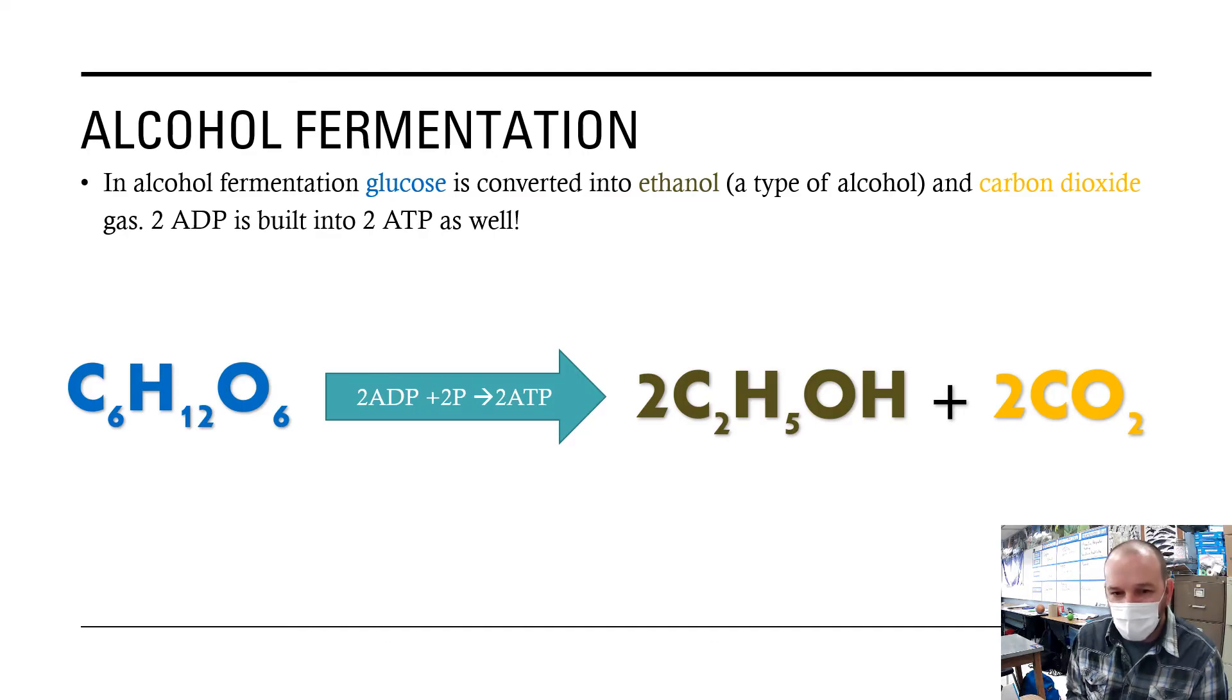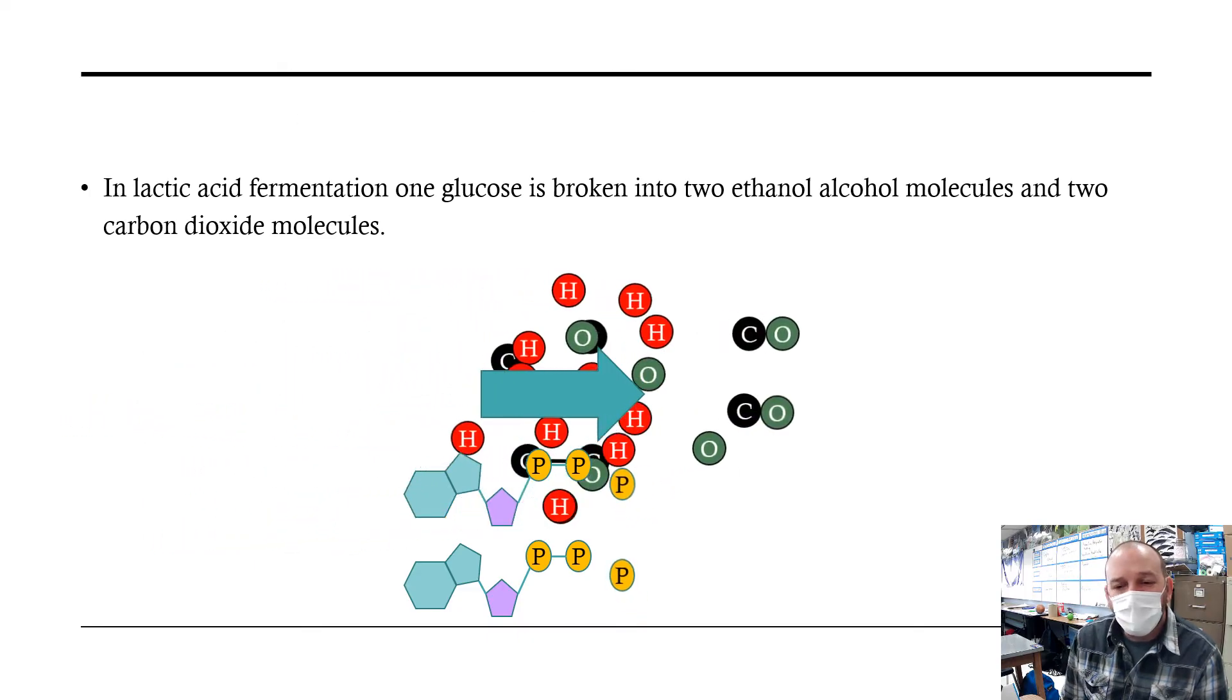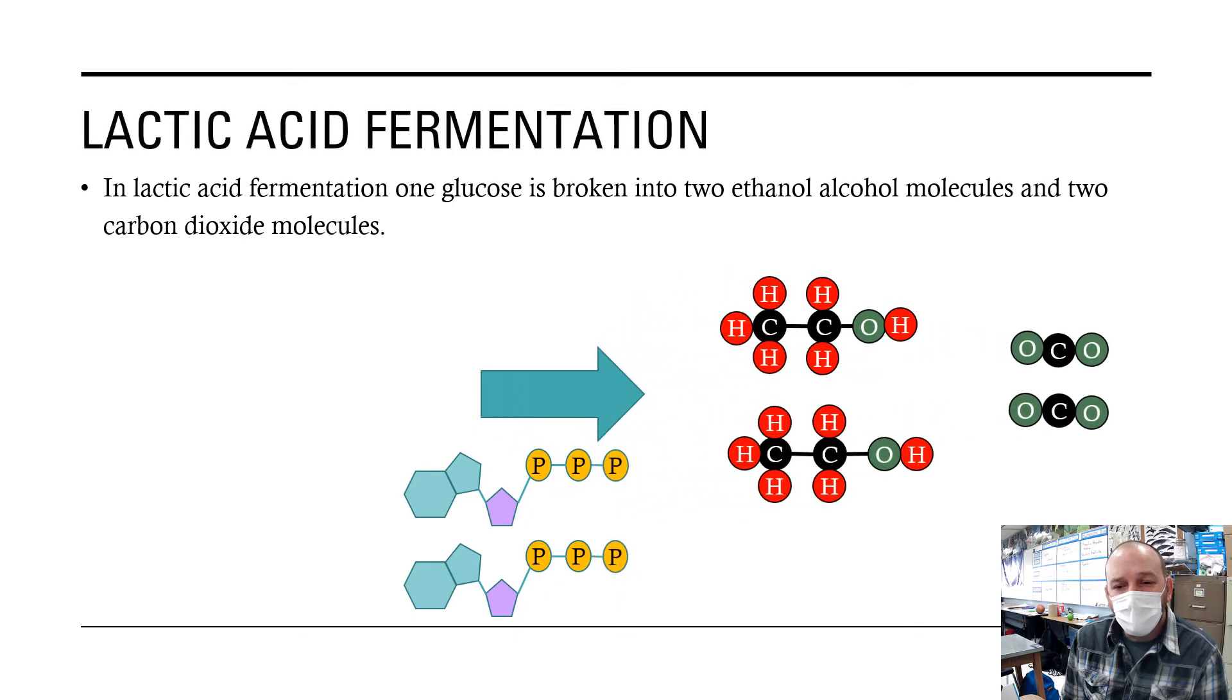and two carbon dioxide. Here's the modeling: we start with glucose, the diphosphates, and the extra phosphates. In the process, the atoms rearrange to make two ethanol alcohols, two carbon dioxide, building the adenosine triphosphate.